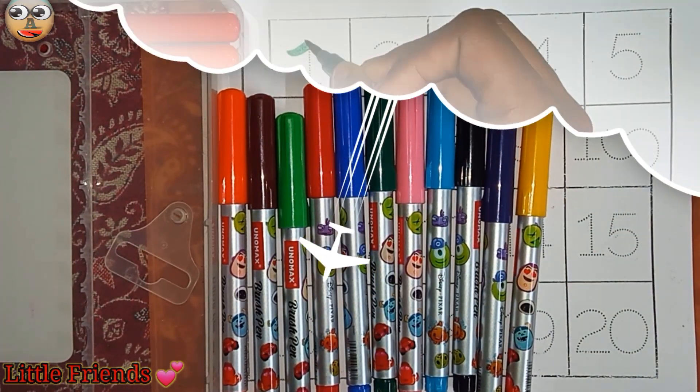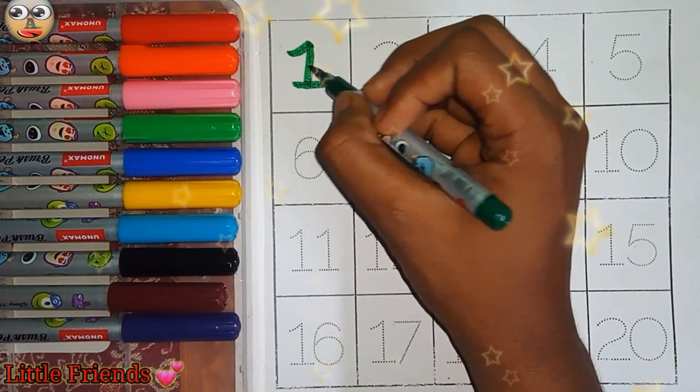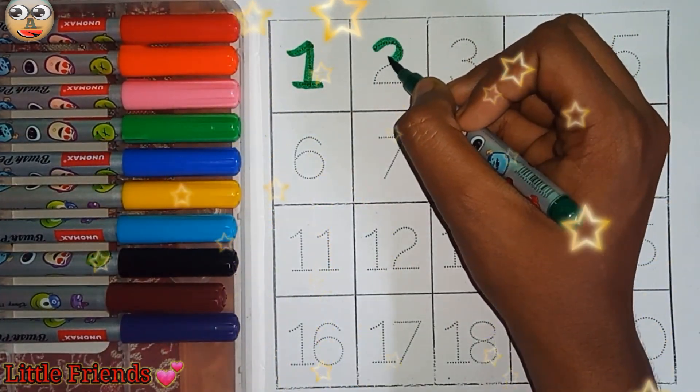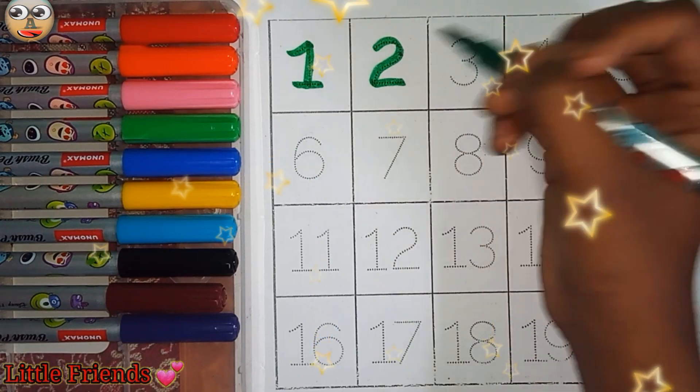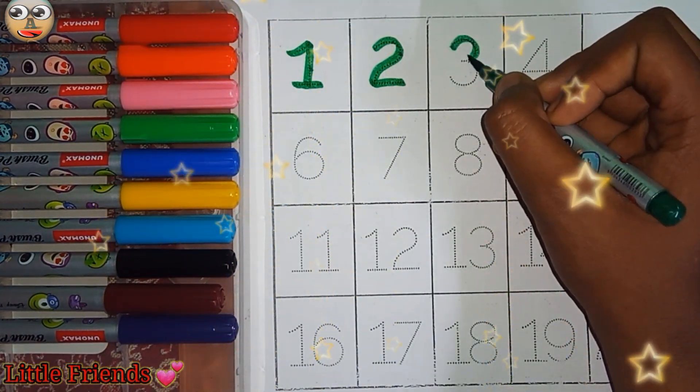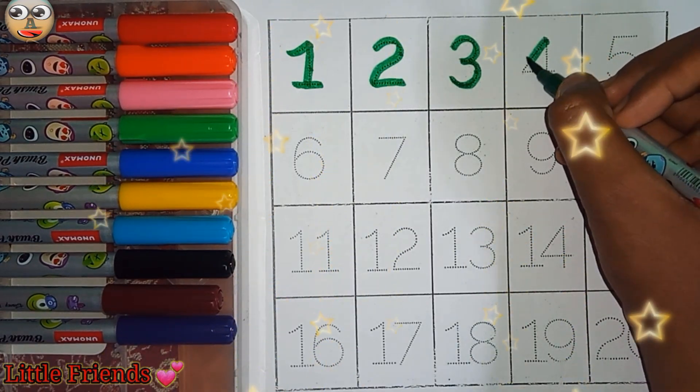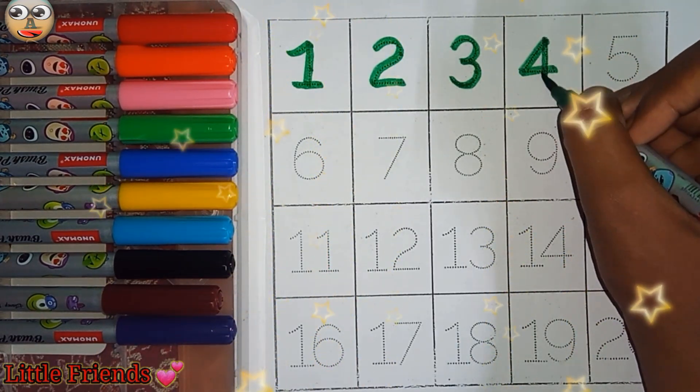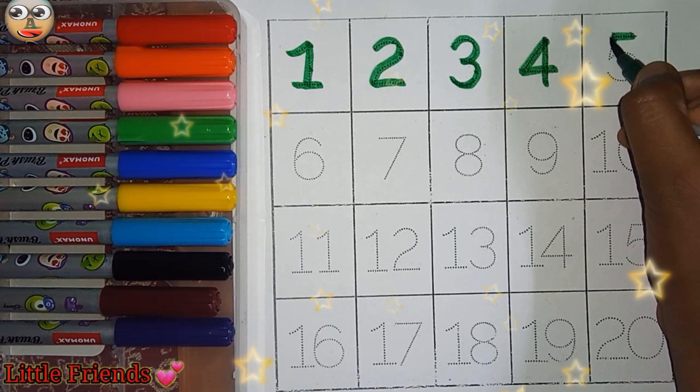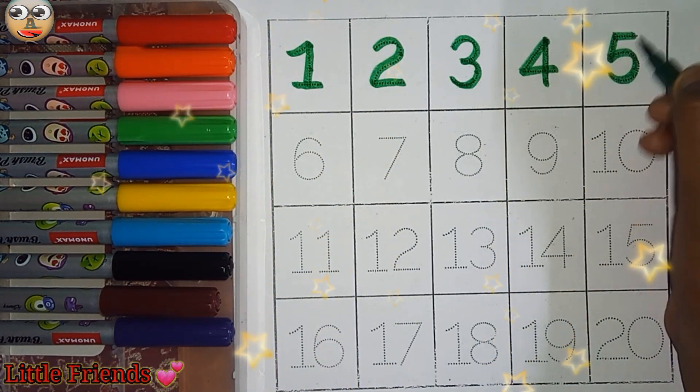Let's start the class. This is 1, 2, 3, 4, 5.